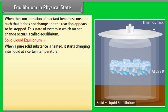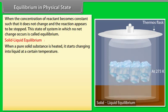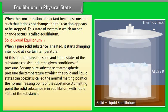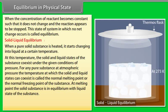Solid-Liquid Equilibrium: When a pure solid substance is heated, it starts changing into liquid at a certain temperature. At this temperature, the solid and liquid states coexist under the given conditions of pressure. For any pure substance at atmospheric pressure, the temperature at which solid and liquid states coexist is called the normal melting point or normal freezing point. At the melting point, the solid substance is in equilibrium with the liquid state.